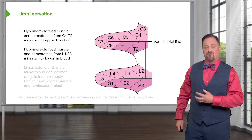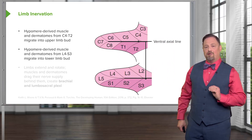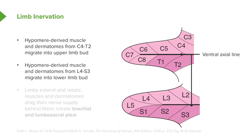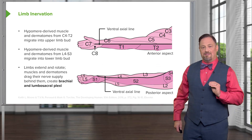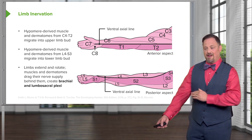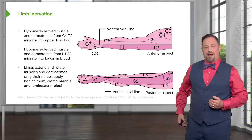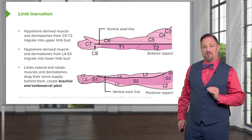As the limb buds extend, those dermatomes and myotomes get stretched out, separated by a ventral axial line. In the upper limb, C3 through C7 go one direction, then turn the corner, and C8, T1, and T2 take care of innervation on the inferior side of the upper limb. A similar thing happens in the lower limb. As the limbs extend, that easy segmental confirmation of dermatomes and myotomes breaks down into the more complex dermatome map we're used to seeing in anatomy and clinical skills. Developmentally, the ventral axial line stays in place on the anterior surface of the upper limb and the posterior surface of the lower limb, still separating those dermatomes.